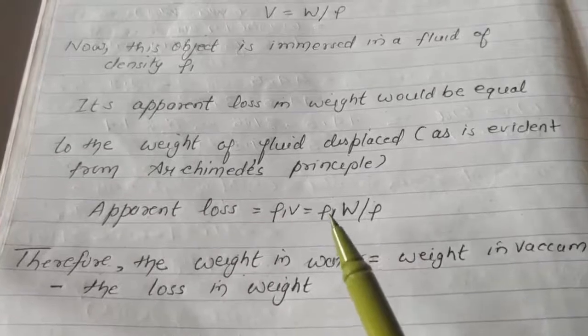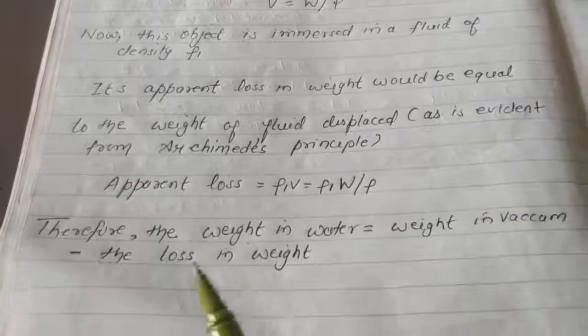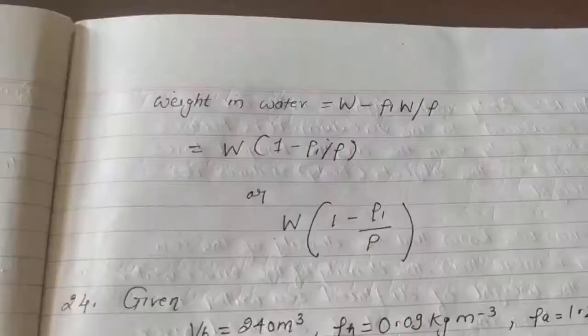This rho l is the liquid density, and this is your density, that is object's density. So, therefore the weight in water is equal to weight in vacuum minus the loss in weight.